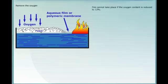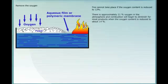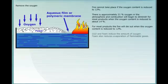Fire cannot take place if the oxygen content is reduced to 12%. There is approximately 21% oxygen in the atmosphere, and combustion will begin to diminish for most products when the oxygen content is reduced to about 14%. For most products, the fire will die out when the oxygen content is reduced to 12%. CO2 and foam reduce the amount of oxygen.